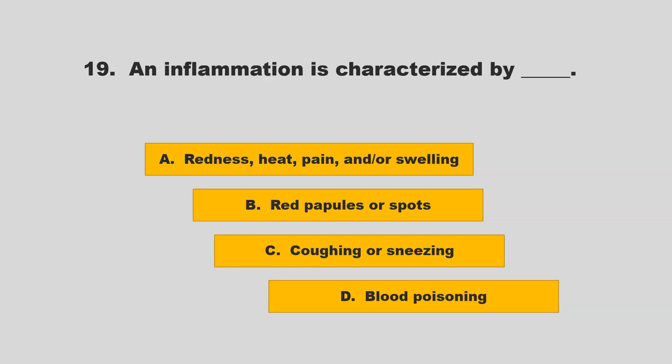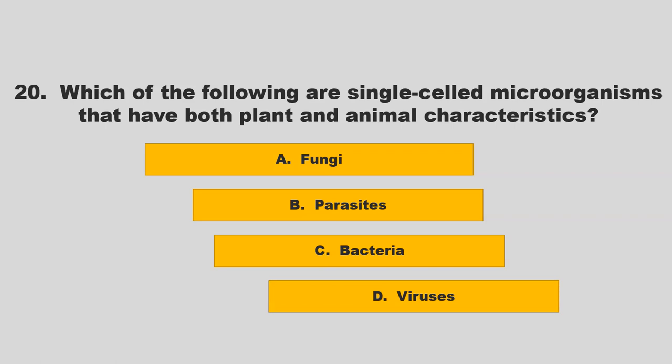An inflammation is characterized by blank. Options: redness, heat, pain, and/or swelling; red papules or spots; coughing or sneezing; or blood poisoning. The correct answer is A: redness, heat, pain, and/or swelling.